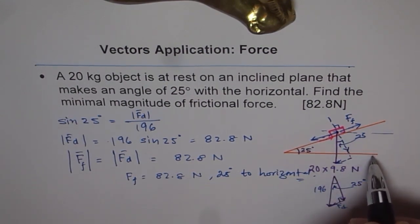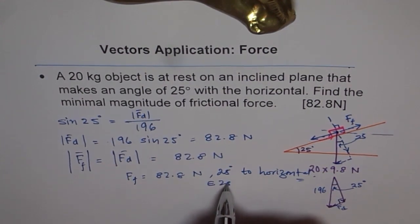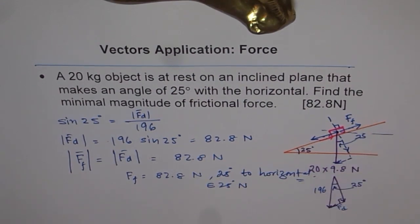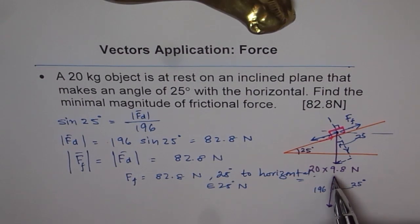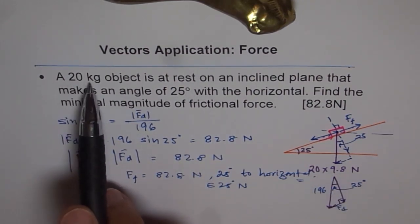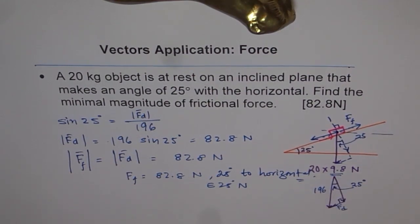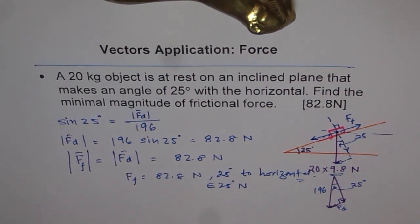You can also express the direction as 25 degrees north of east, which will be the direction of the frictional force. I hope you now understand how to solve inclined plane problems. Adopt this strategy to solve a few more questions. One important thing: whenever we have a mass of 20 kg, we need to convert that to force in newtons by multiplying by 9.8 meters per second squared — the acceleration due to gravity, which always acts downward. Keep that in mind and solve similar problems.